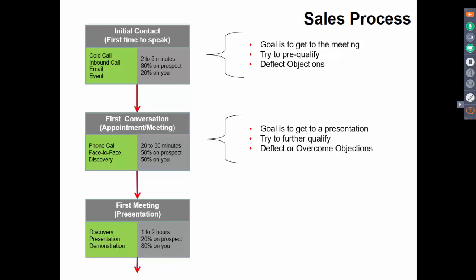According to the sales process, let's focus on deflecting until we get to the appointment. Then at the appointment we might deflect the objection or try to overcome it, and in a formal discussion we're primarily trying to overcome objections and address the prospect's concerns. For the objection responses I'm going to show you, they align with this philosophy, so it helps to agree with this framework in terms of delivering what we're going to recommend.